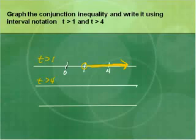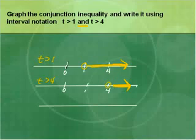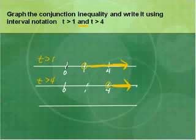T greater than four means an open circle on four and moving to the right. When the conjunction is 'and,' your solution set is where the two graphs overlap each other. These two graphs start overlapping at four and continuing to infinity. So the final graph for T > 1 and T > 4 will have an open circle on four, continuing to the right — you are looking for where the two graphs overlap.